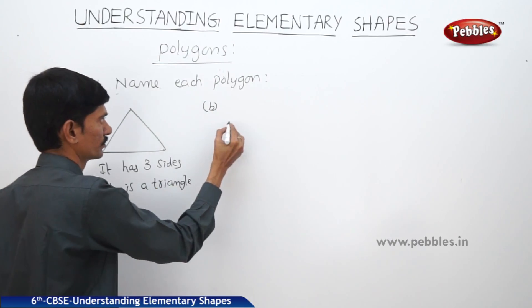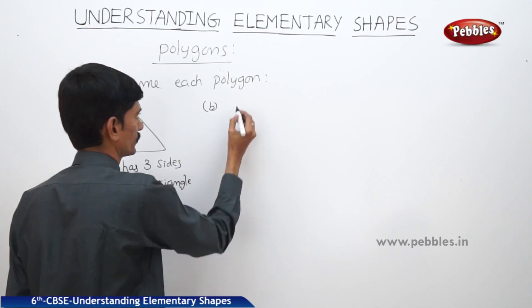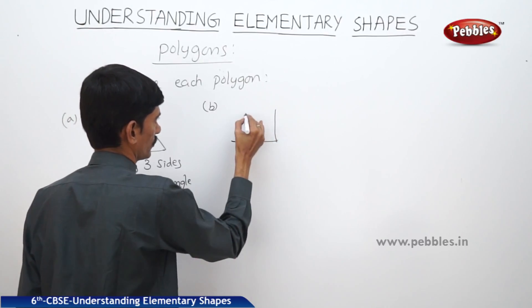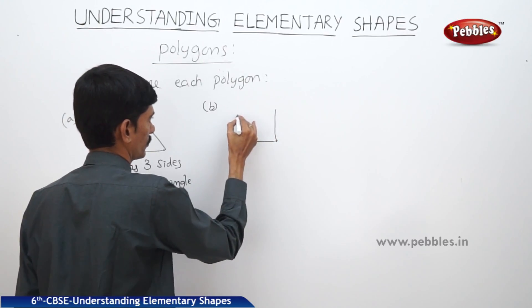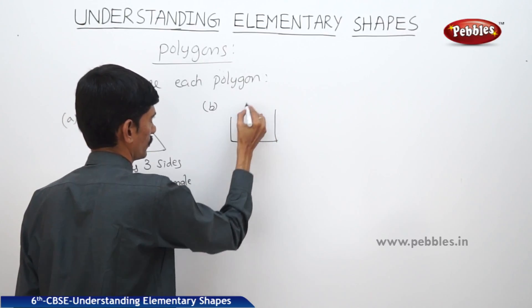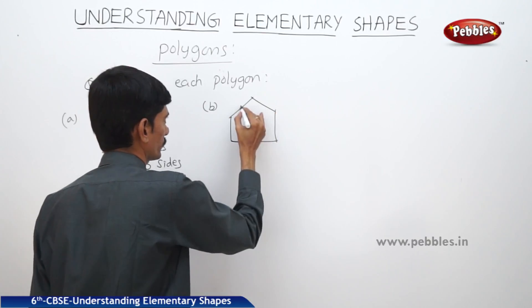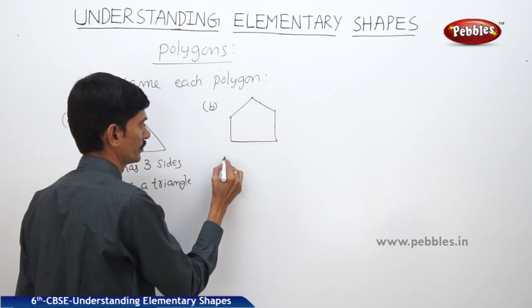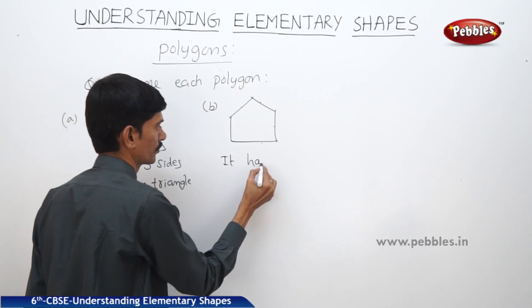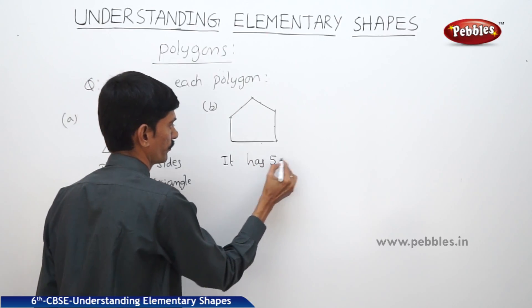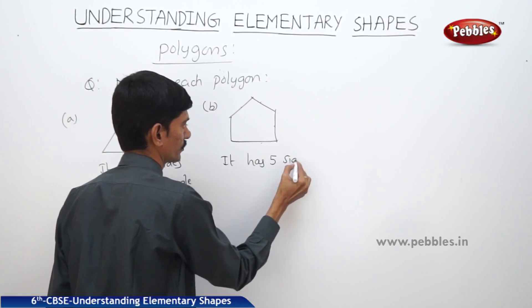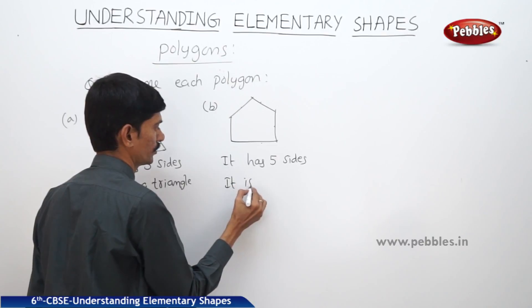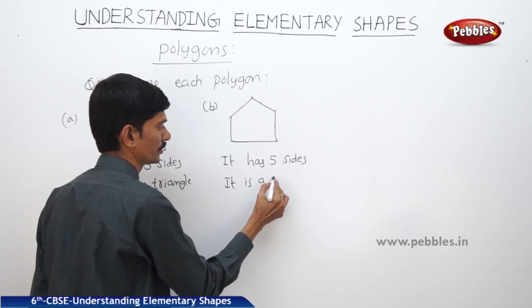Now the second one has one, two, three, four, five sides, so it has five sides, so it is a pentagon.